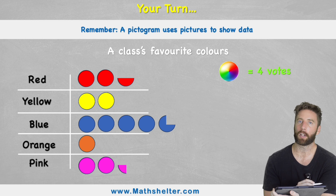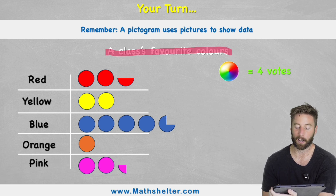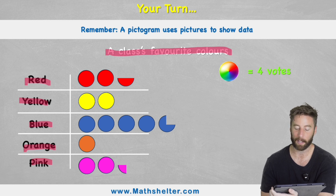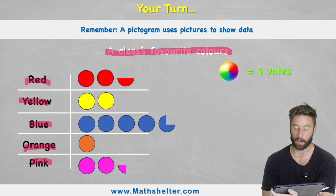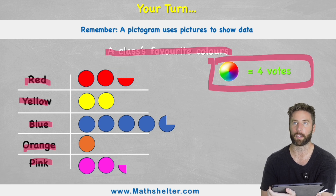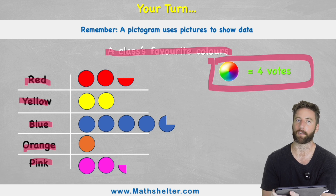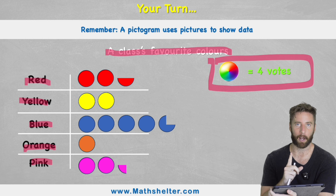Your turn. Can you work out how many the total was for each of these categories? The question says: what are our class's favourite colours? We have red, yellow, blue, orange and pink, with the data shown in circles. Each circle is worth 4 votes. So what are my totals for each of the colours? Press pause, work it out and put your answers in the comments section — I'm going to mark them all.